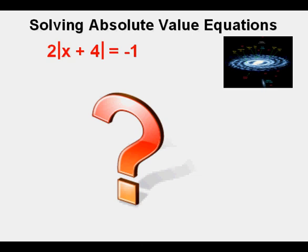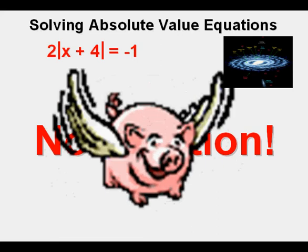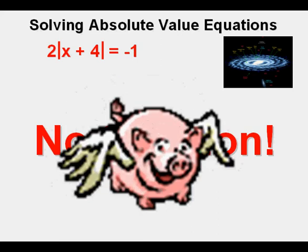What does it mean if it's negative on the right side? Since it's impossible for the absolute value of anything to be a negative number, this equation has no solution. And even if we divide both sides by 2, we still have the absolute value bracket equaling negative 1 half. And to remind us, we bring back our friend to emphasize the point.